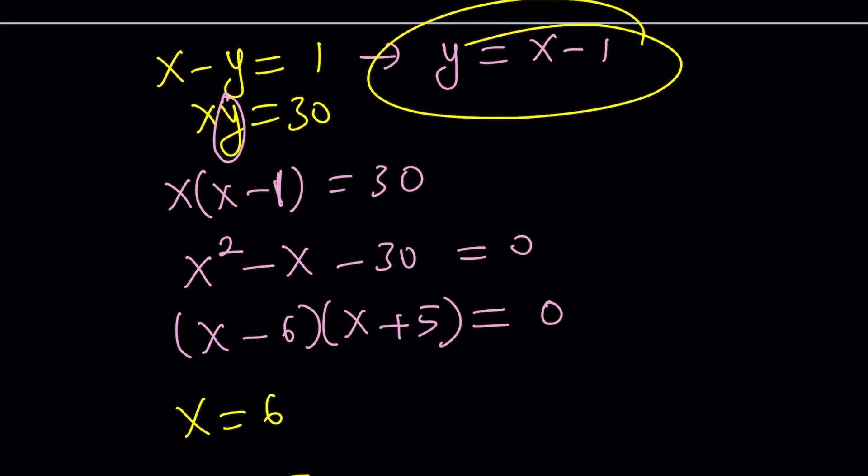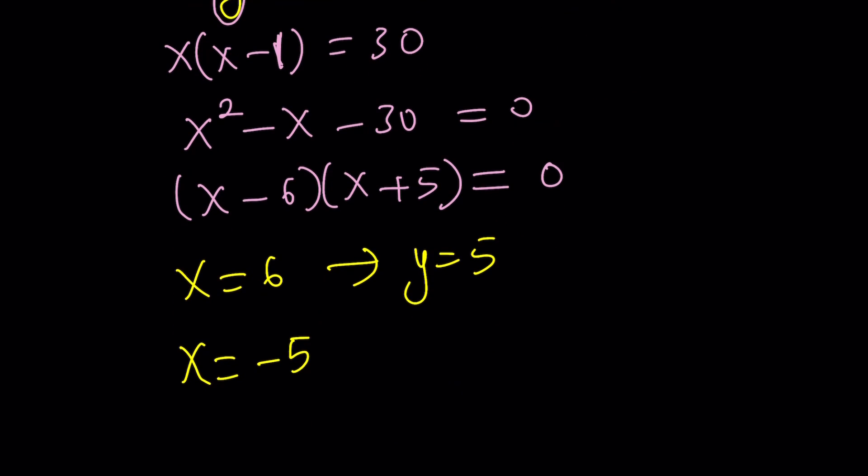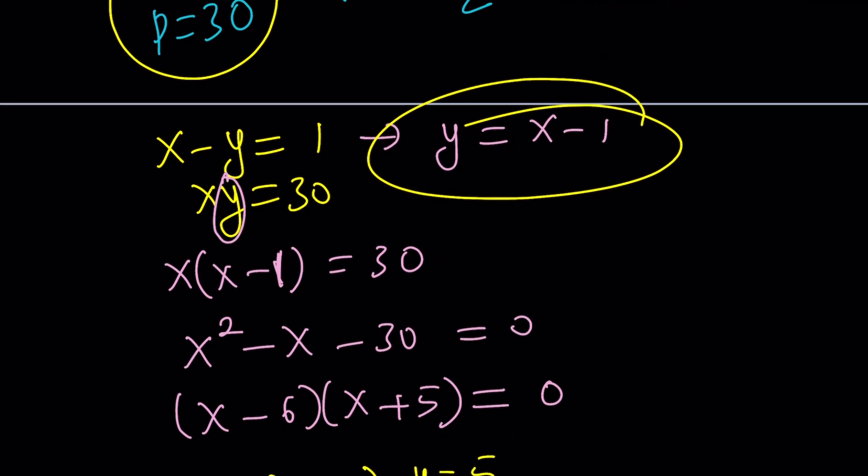Remember, y is 1 less than x. So if x is equal to 6, y is going to be 5. If x is negative 5, y is going to be negative 6. Notice that the product of these numbers is 30 and y is always 1 less. Of course, they're not symmetrical. x isn't always greater than y. In this case, y is greater. Okay. That makes sense? Great.